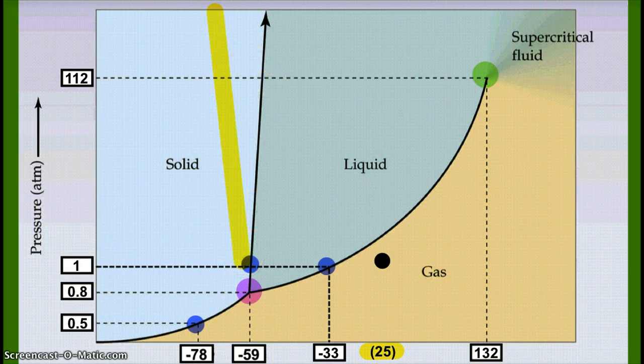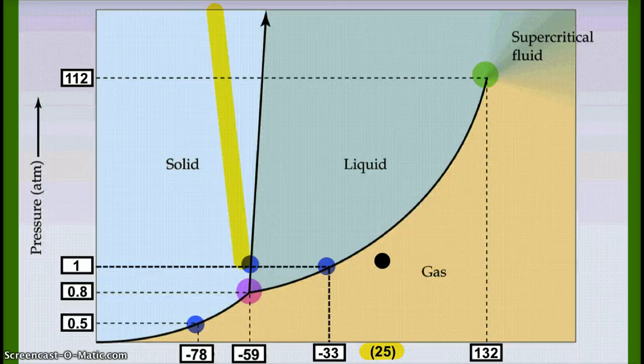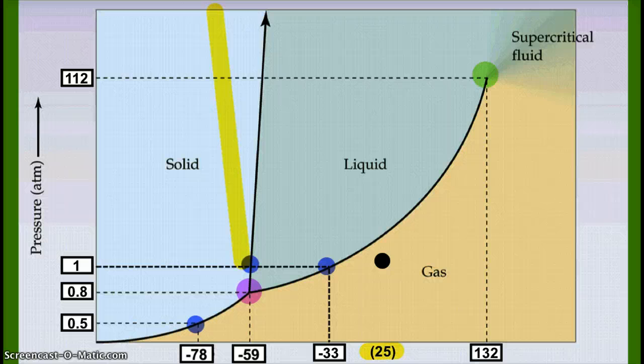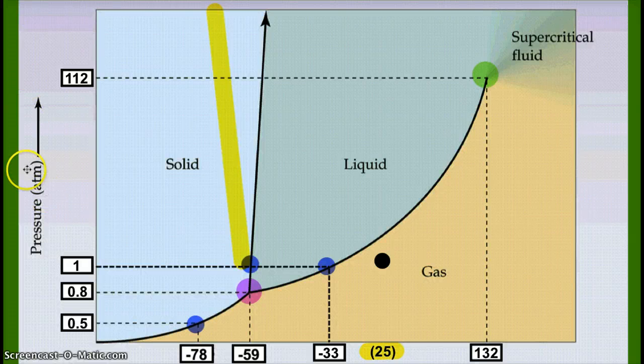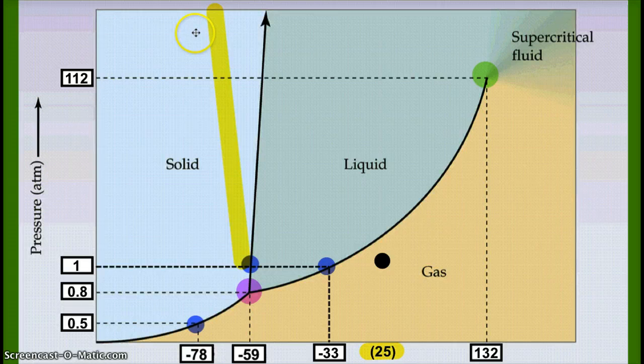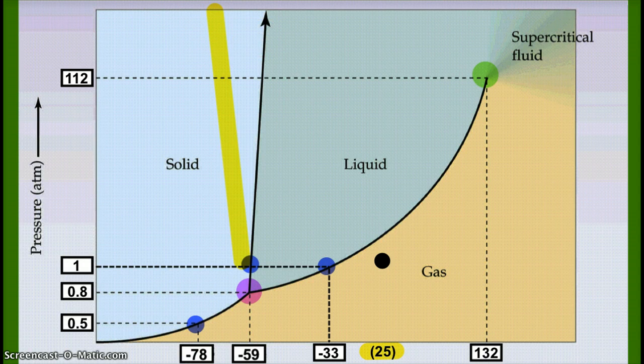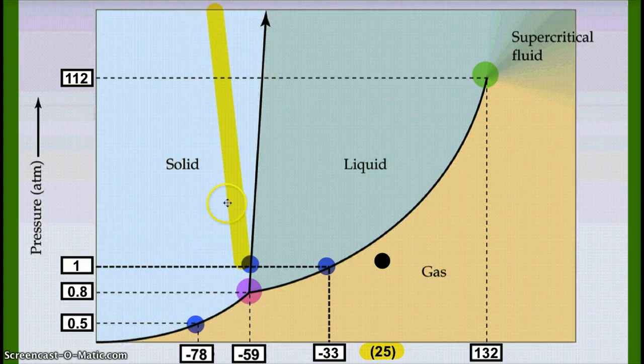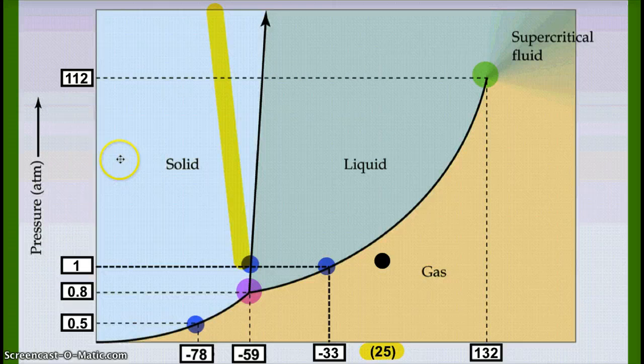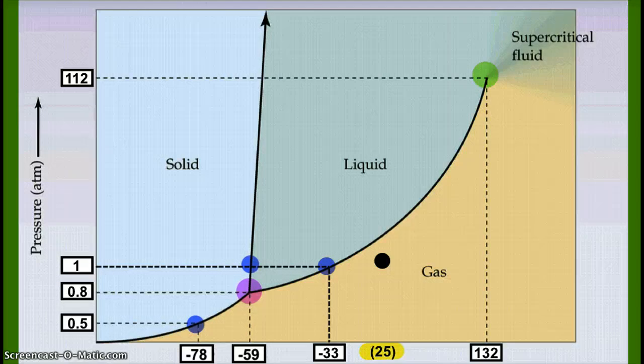This is true for all substances where the solid form is less dense than the liquid form. That's why that line ends up that way. It's because of the different pressure situations and how pressure doesn't affect solids as much. We can tell by the boiling point and melting point temperatures at one atmosphere, but also because of that line and whether or not it's positively or negatively sloped.